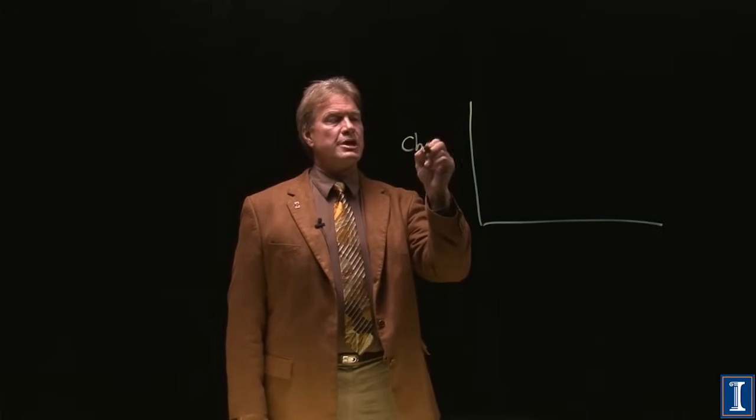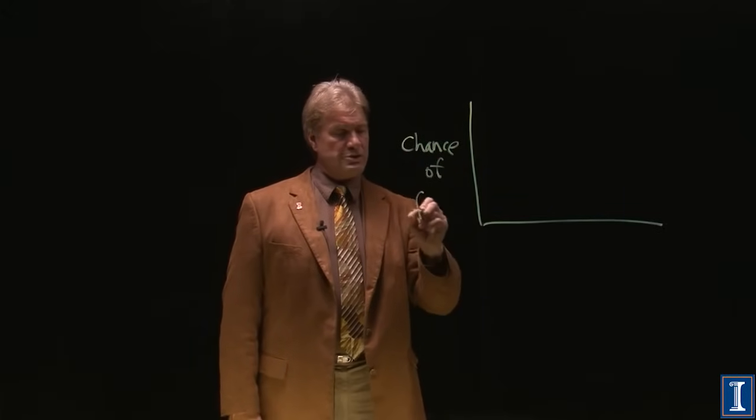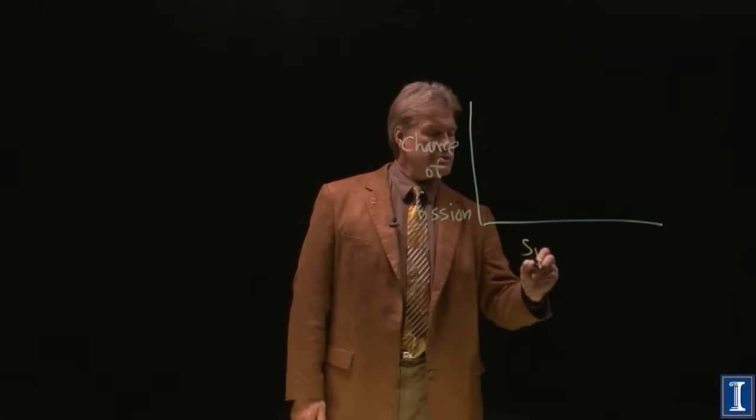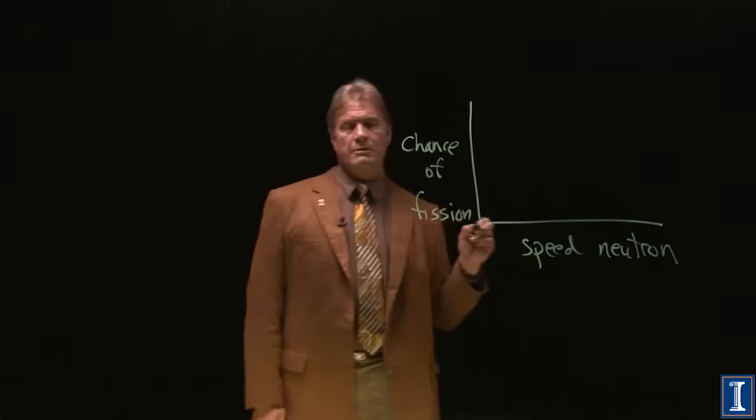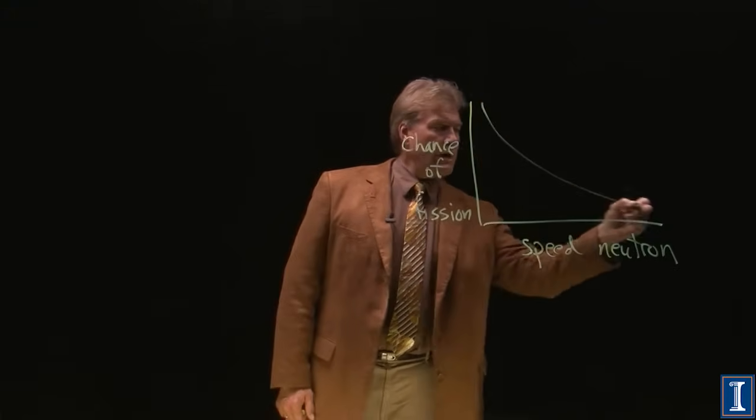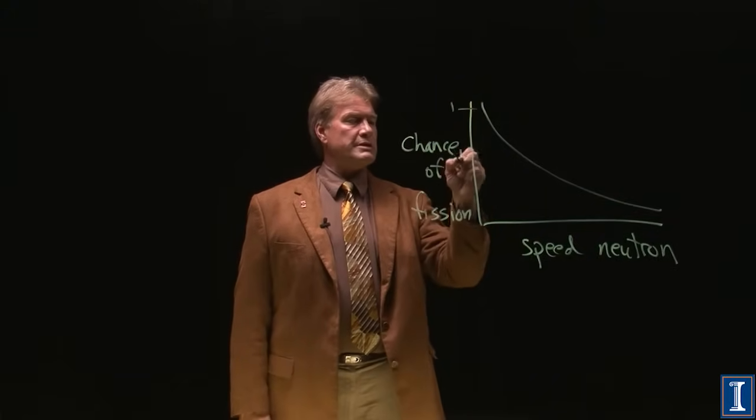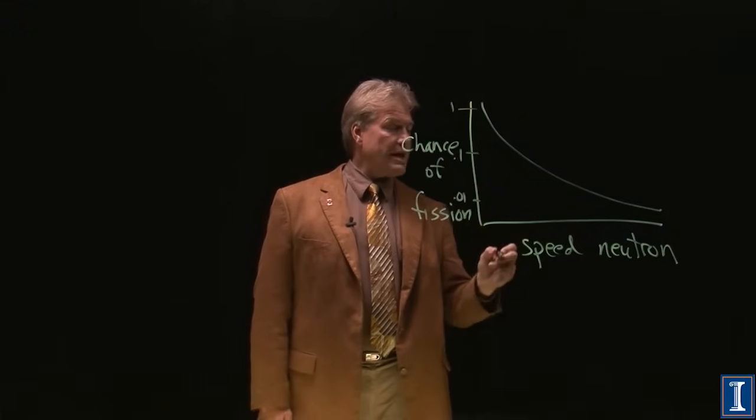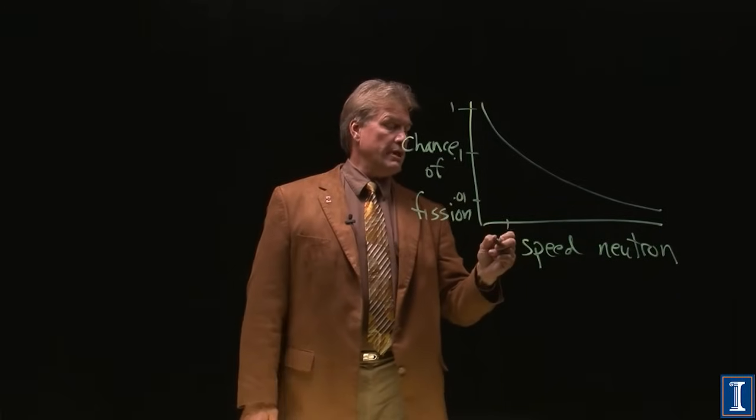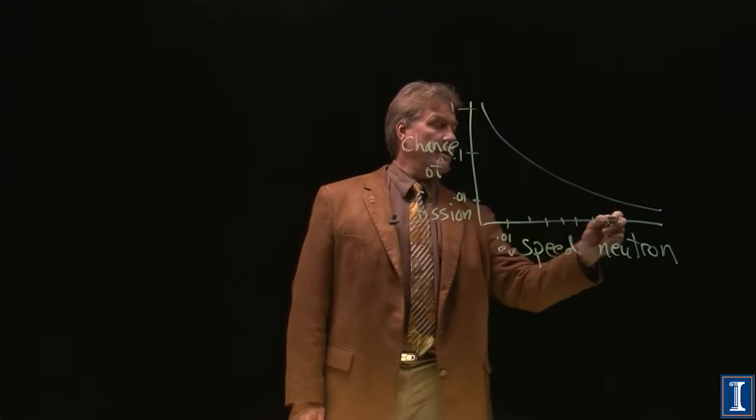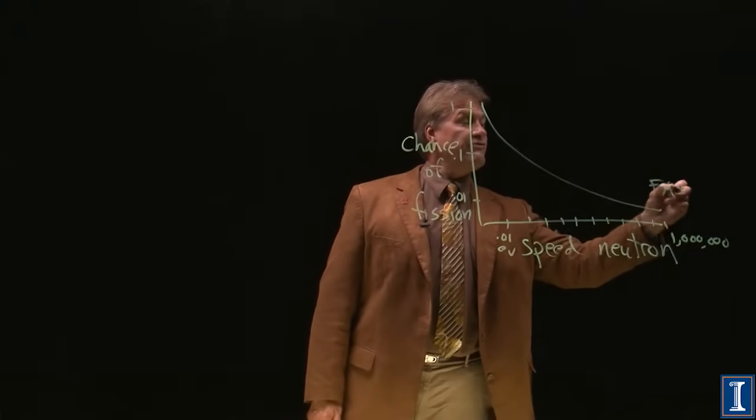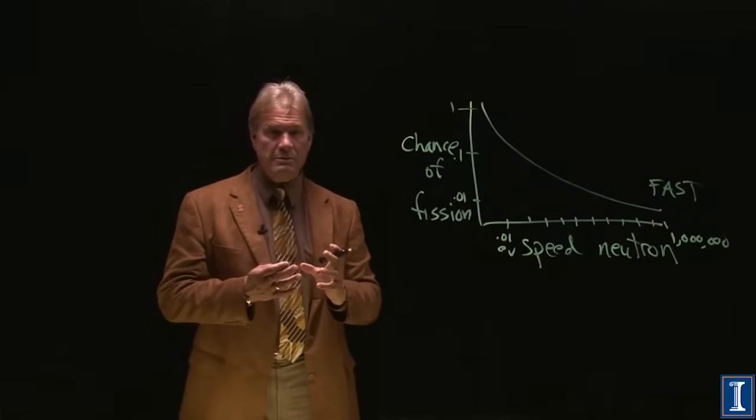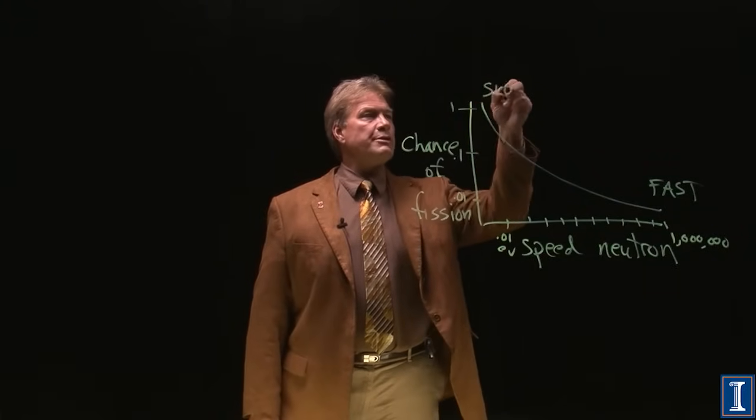We've drawn this graph before, but it's very illustrative. This is the chance of a fission event. And this is the speed of the neutron. It's a log graph, and it looks something like this. And this might be one, and this is a tenth, and this is a hundredth. And on this side, it goes by nine orders of magnitude. This could be 0.01 eV. And we have a whole bunch of these, and we come up to something like a million electron volts. The neutrons are born fast. That's when they're created by the fission.